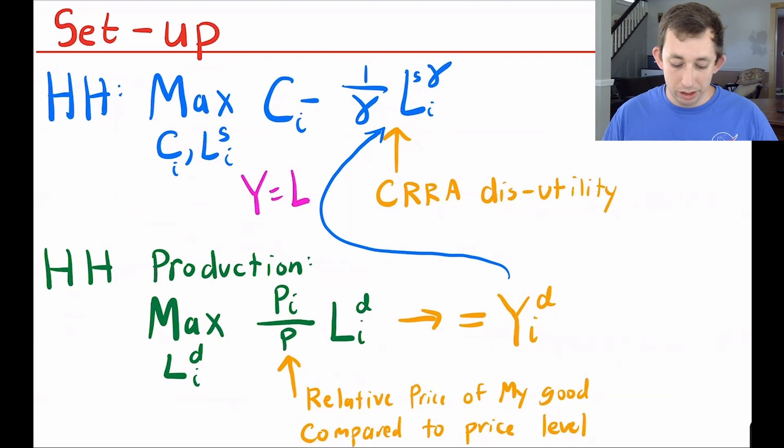Now on the consumption side, we're just going to be choosing the consumption of everything we buy and we're choosing how much we want to work on producing that good that we and only we make as that household. It's going to be a pretty simple function, just consumption minus a CRRA disutility of labor, where you have a minus sign with one over gamma, labor to the gamma. Notice from before, we said that y equals l, which is a substitution we're going to be making throughout this derivation.